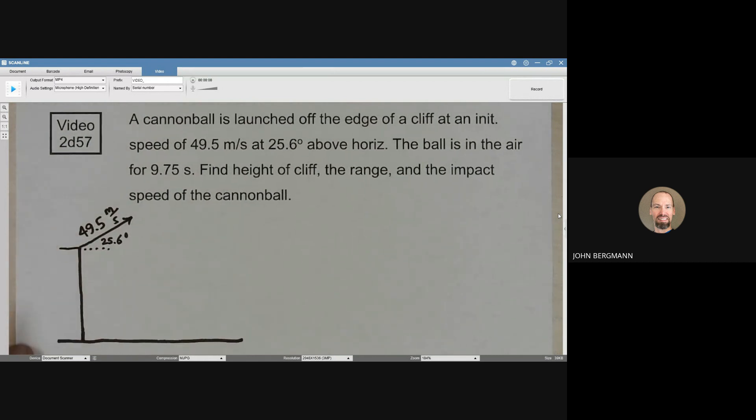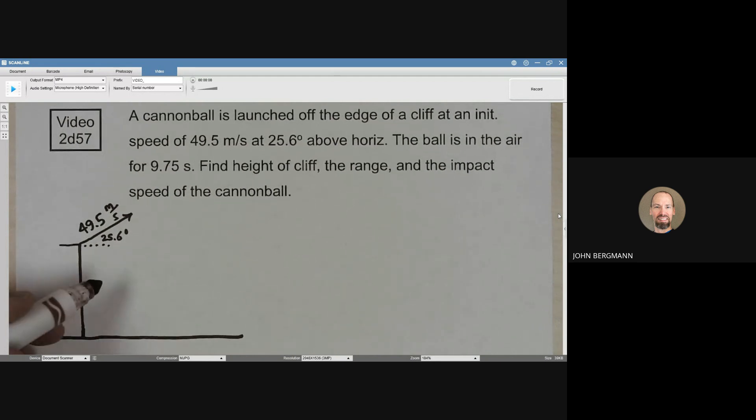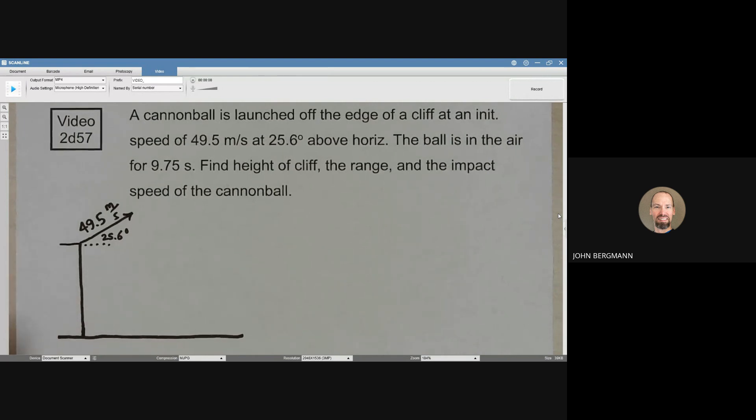As always, it's important to define positive for the vertical direction. And so since this projectile is going in the upward direction, I'm going to say that upward is positive, which means that Ay is going to be negative 9.81 because the acceleration always points towards the earth.